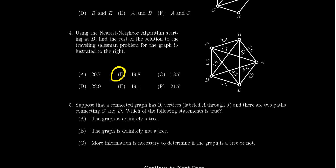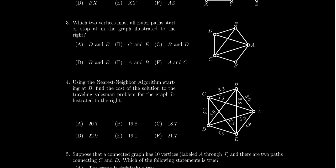A quick note: Euler circuits were covered in lesson three, so go back there to review Euler's theorem and Euler paths. The nearest neighbor algorithm was introduced in lesson six — lesson five introduced Hamilton circuits but not the nearest neighbor algorithm. Keep that distinction in mind as you prepare.